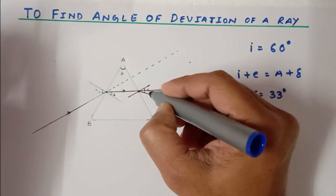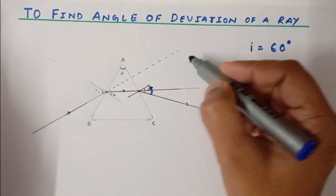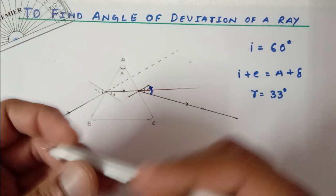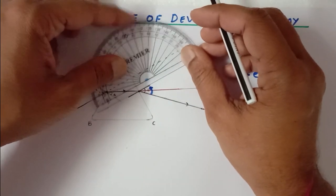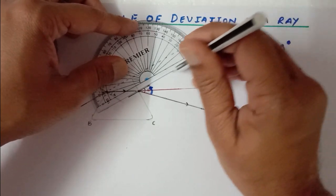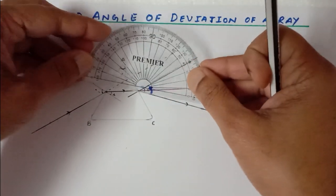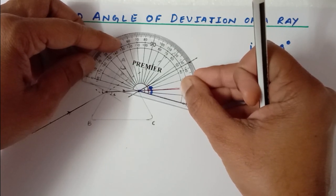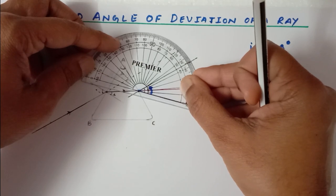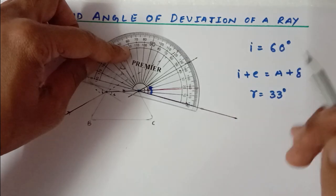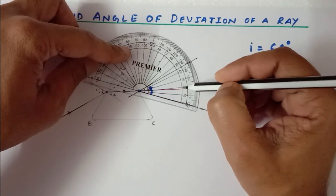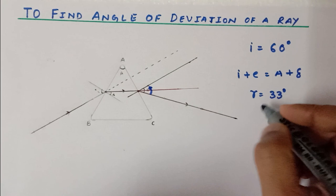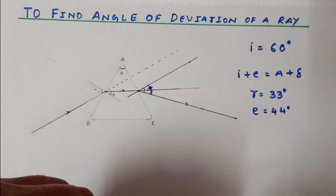The angle of emergence is basically this angle, and for that I am going to extend the normal, because the angles are always with respect to the normal. Let me extend this and now let me measure it. This is 44 degrees — one less than 45. Let me show you: 0, 10, 20, 30, 40, 44 degrees. So this angle is 44 degrees, and the angle of emergence is 44 degrees.